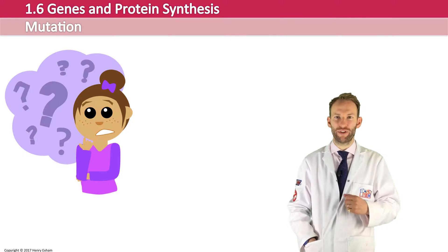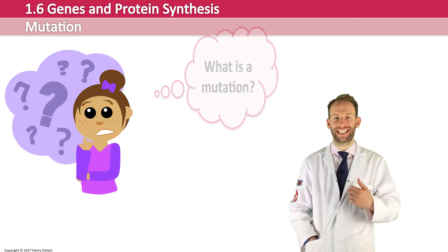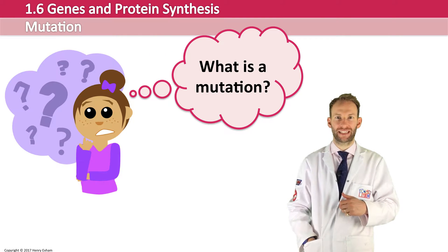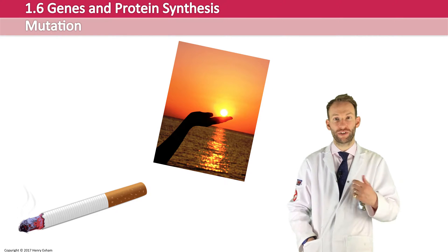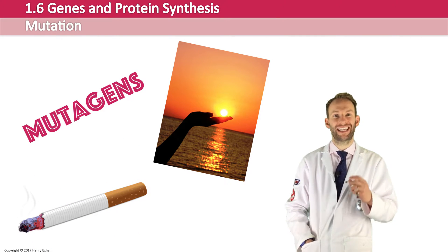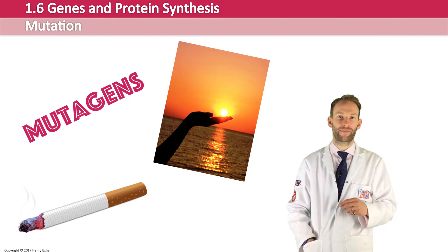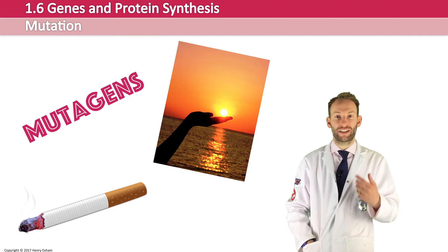So what is a mutation? A mutation is a permanent change in the DNA of an organism. Mutations can occur because of factors in our environment such as chemicals inhaled from smoking or UV light, and these factors are what we call mutagens. However, mutations randomly happen all the time — mutagens just increase the rate of them occurring. Quite often mutations are harmless, but every now and then they can cause serious problems.